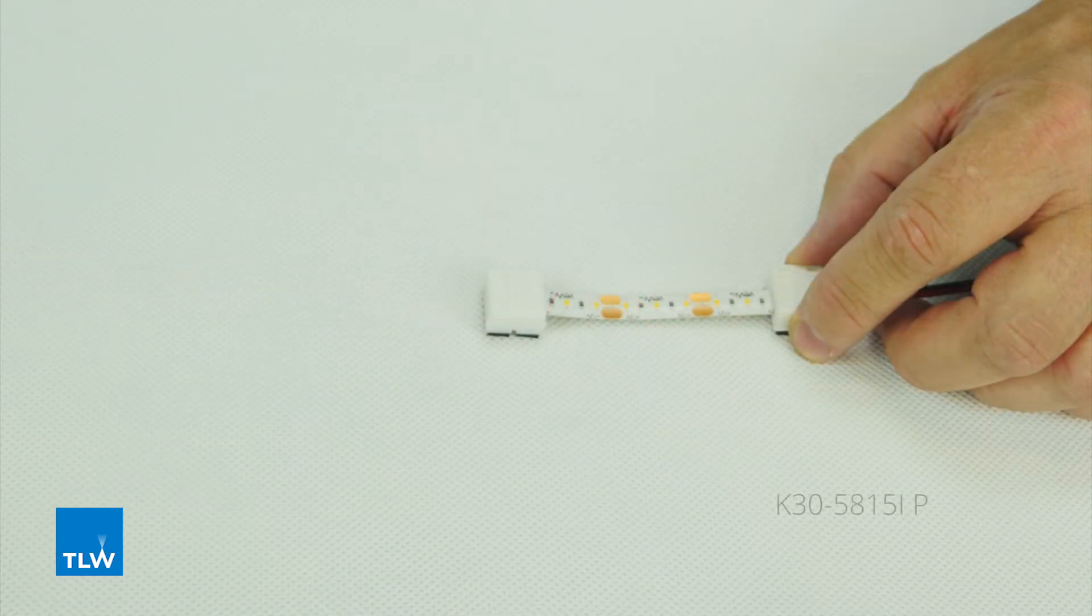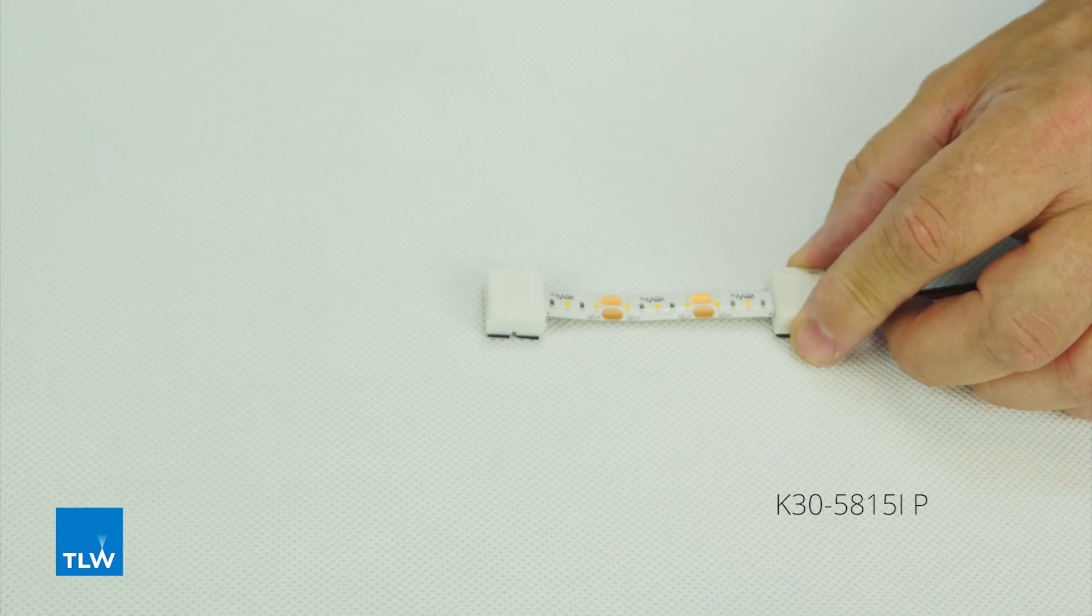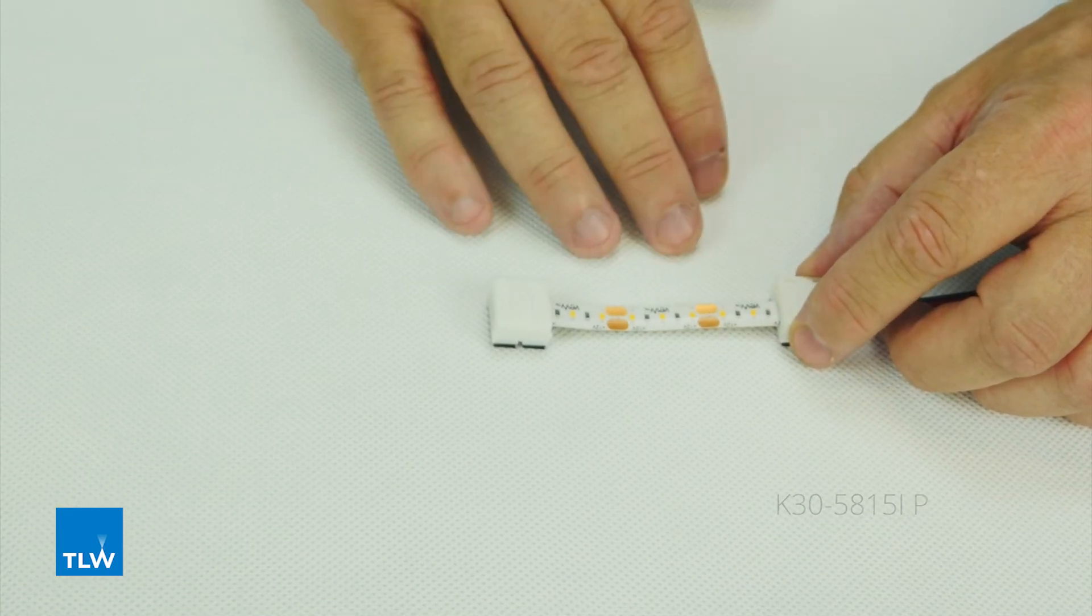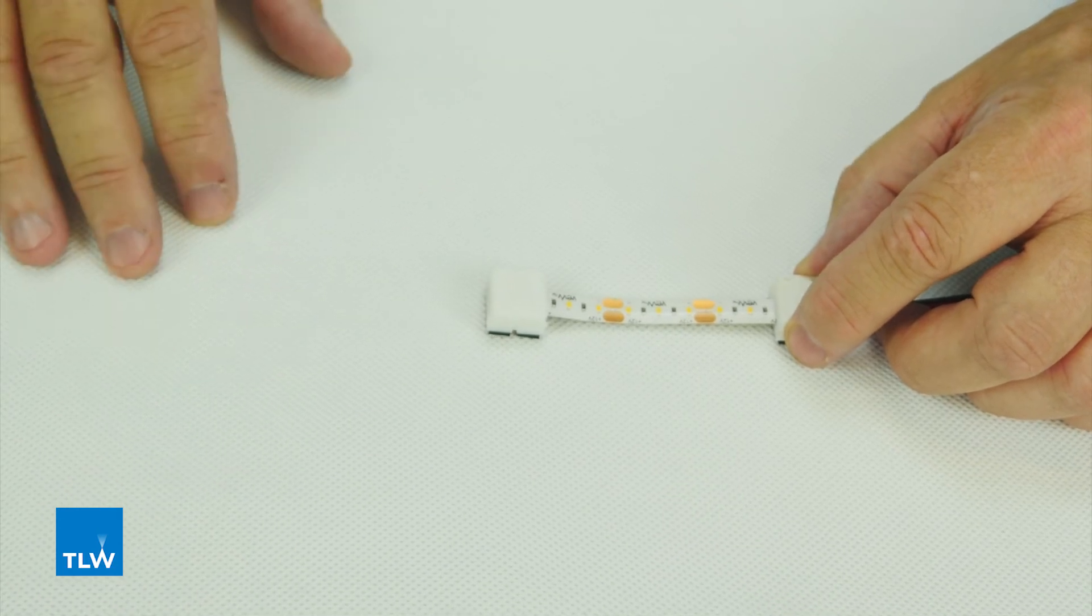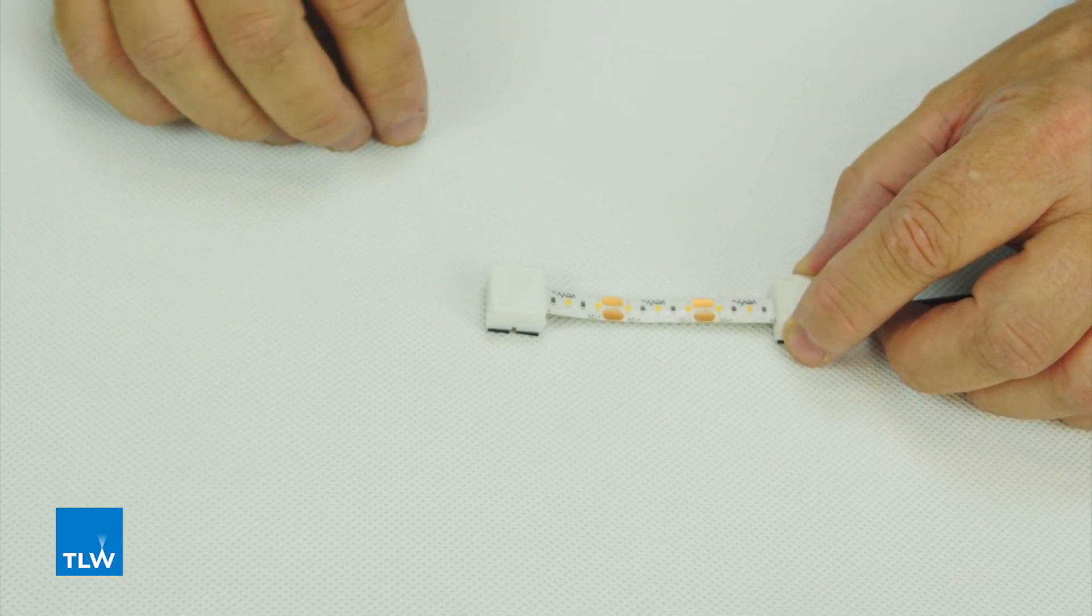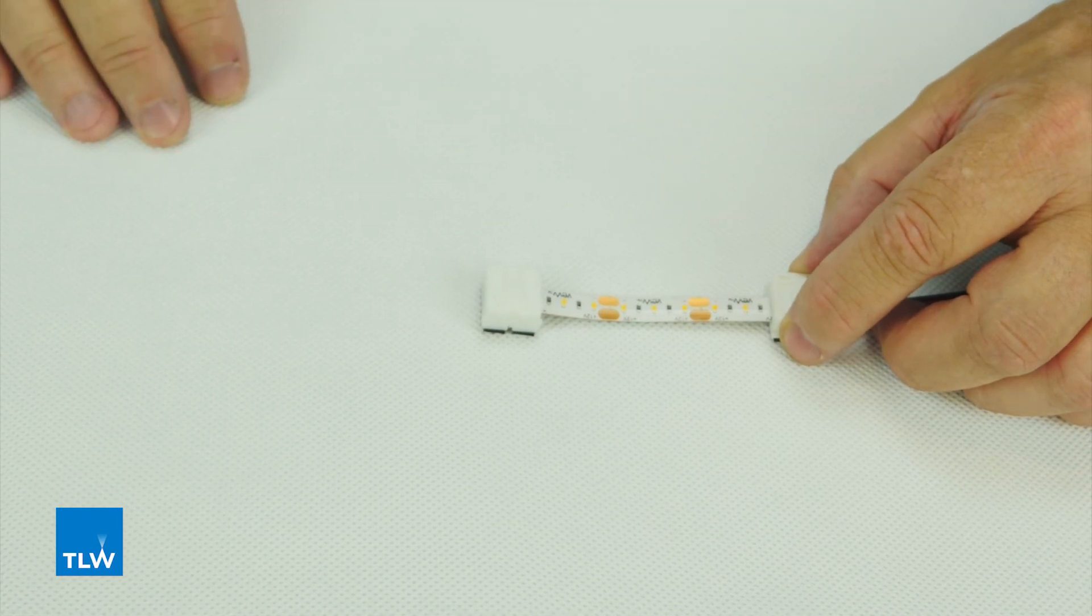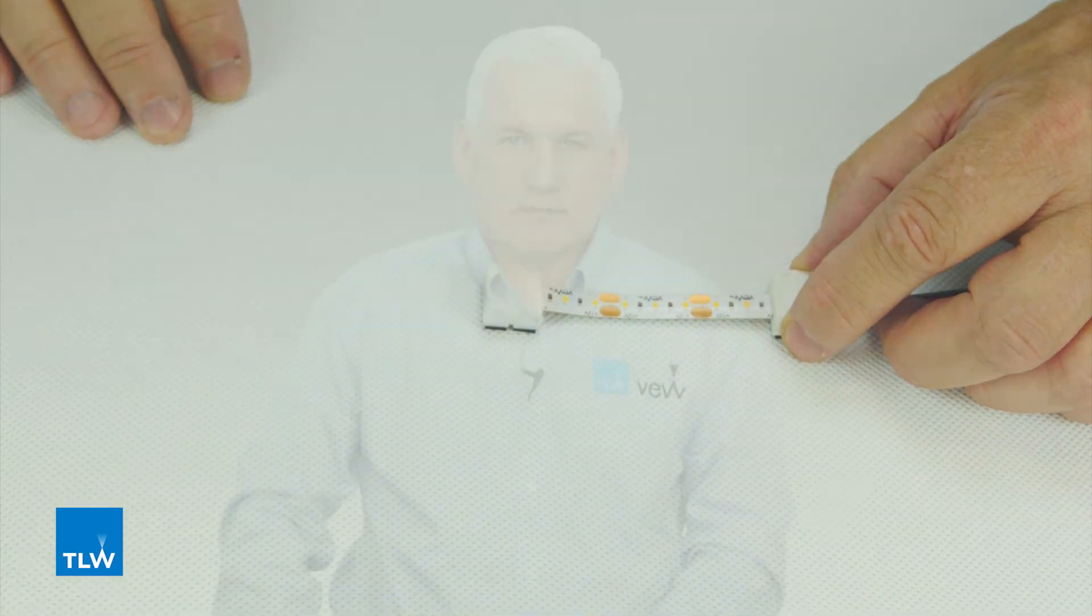This is a K30-5815 IP rated buck connector which allows you to join two separate lengths of tape in a straight line. Simply open them up, put the tapes inside, and close them down like we did with the driver connection lead. For more information, please visit our website.